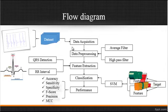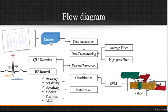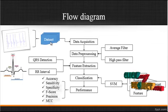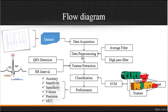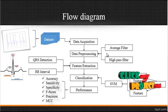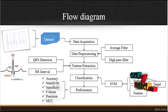First, the ECG signal is taken from the dataset folder, which consists of several signals. After selecting any one signal from the dataset, data pre-processing is carried out. In the data pre-processing step, there are two steps: the first is the average filter, and the second is the high-pass filter.